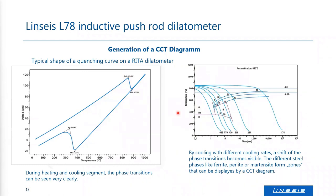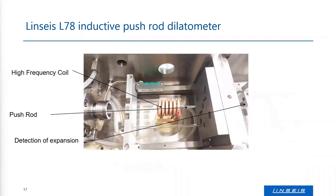For some applications, cooling down with maximum cooling rates is necessary. The highest possible cooling rates can be achieved by purging a cooling gas through small holes in the copper coil directly onto the sample to quench it. Usually helium or nitrogen gas is used, but if the highest possible cooling rates are needed, hydrogen gas is used. So this is also a special application for hydrogen atmospheres.